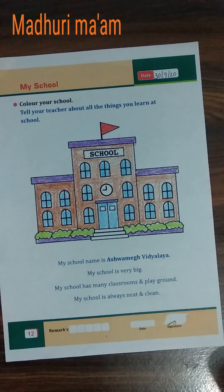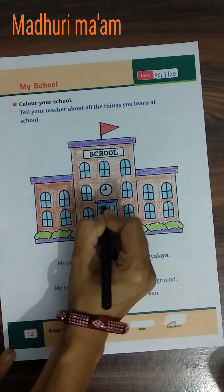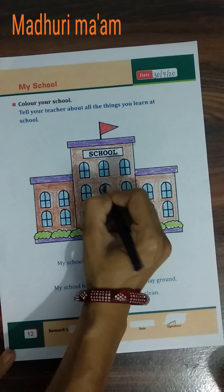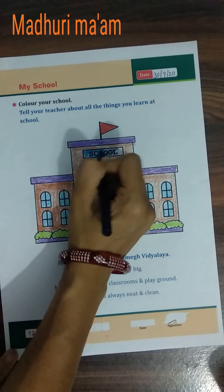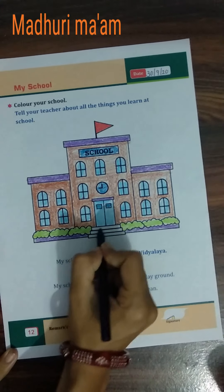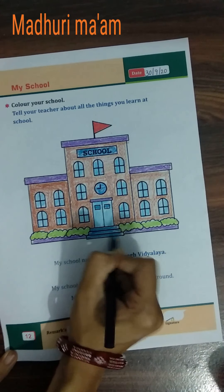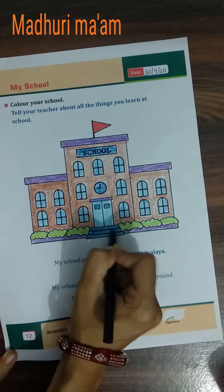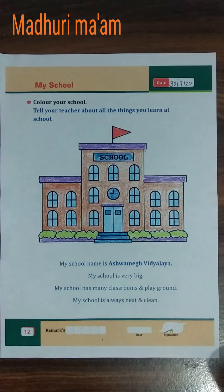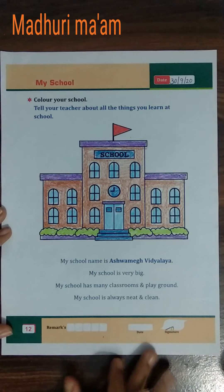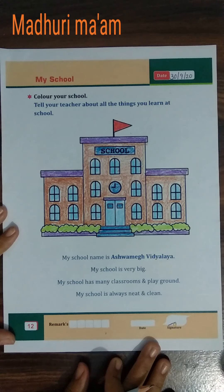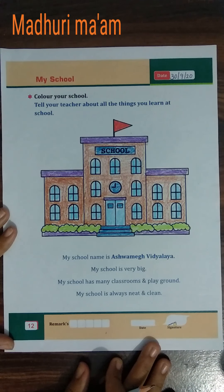You have to color this too. Slowly slowly, color. Very good, like this only. And you have to do it yourself — Mom and Daddy don't do it. Now we take green color.